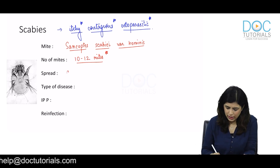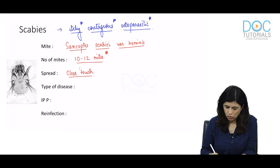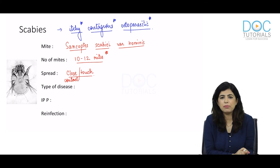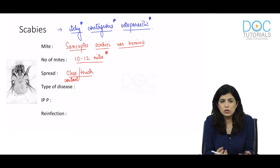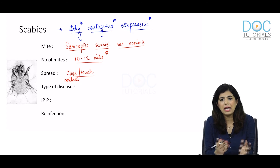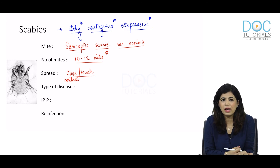The disease spreads by close contact or touch. A close contact or touching happens when people stay in overcrowded conditions — where a lot of people stay together under one roof, there are higher chances of scabies occurring within those groups of people.